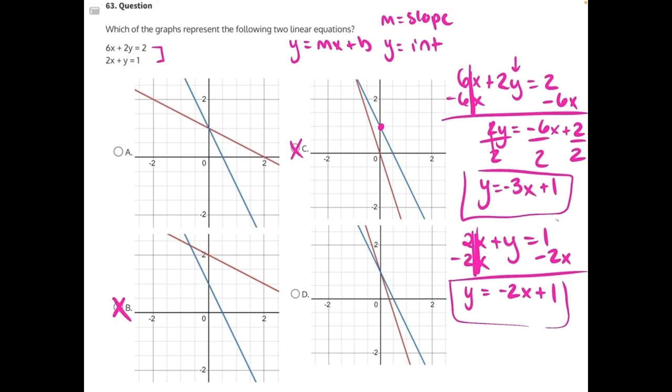Now, the way to tell the difference between answer choice A and answer choice D is to look at our slopes. Our slopes are both whole numbers. They are negative. So that means both graphs are going to be descending in the negative direction from left to right. And both of them are for A and D.